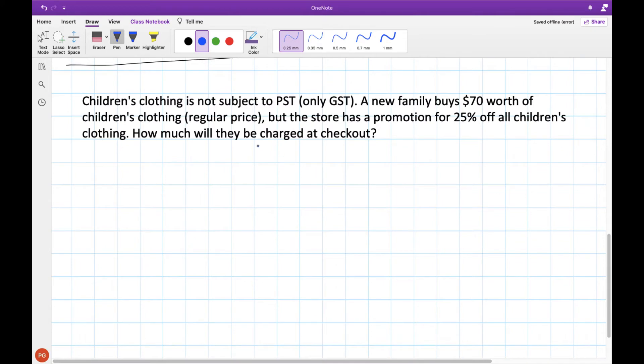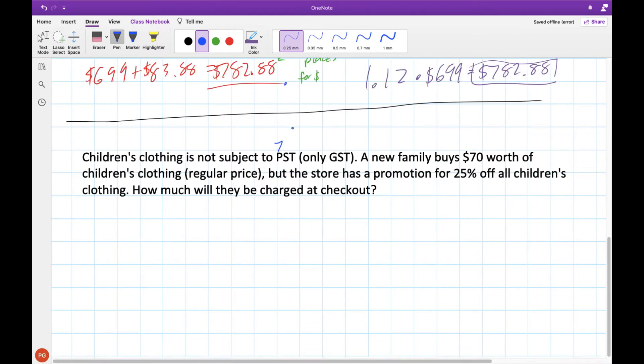All right, here's a different question. One of the things that you might not know is that children's clothing is not subject to PST in British Columbia. So you only get charged GST. So this 7% PST isn't charged, only the 5% GST when it comes to children's clothing, along with a number of other items. So if a new family buys $70 worth of children's clothing at regular price, but the store has a promotion for 25% off, how much will they be charged at checkout? Which means that we also need to take into account not only this discount, but also the GST.